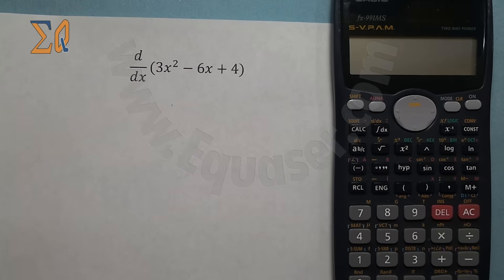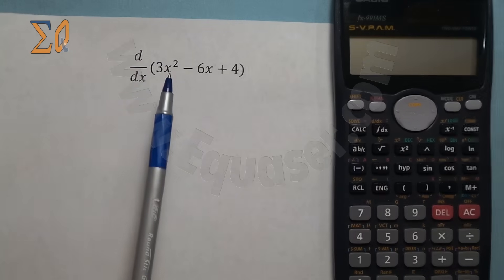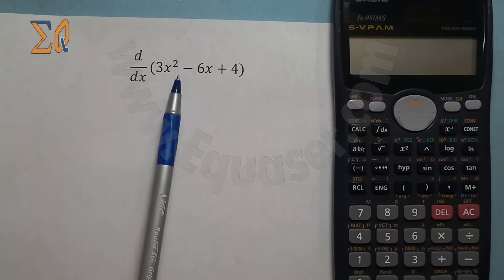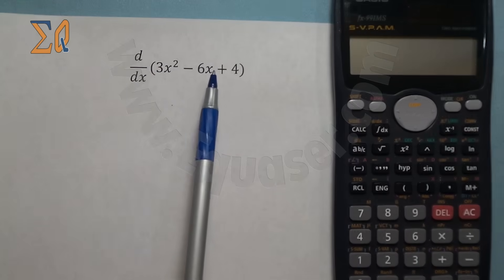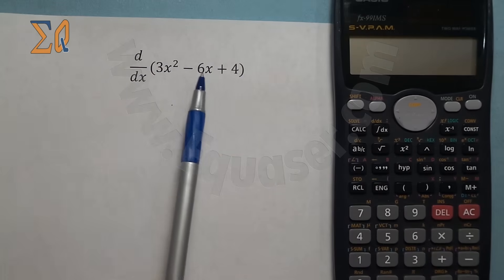Using a Casio calculator to evaluate the derivative of a function at a value. Many times in physics and calculus, you are given a function, let's say the position of an object, and they ask you to find the velocity at two seconds. To find the velocity, you take the derivative - the derivative of position is velocity.